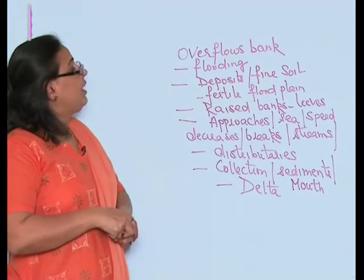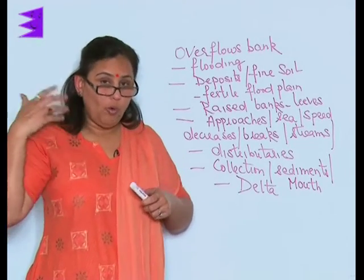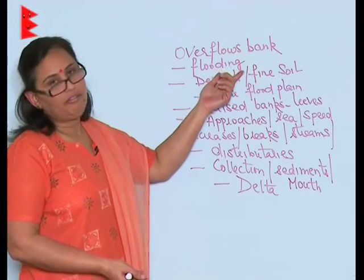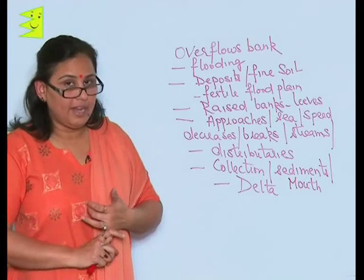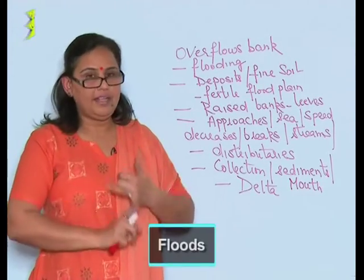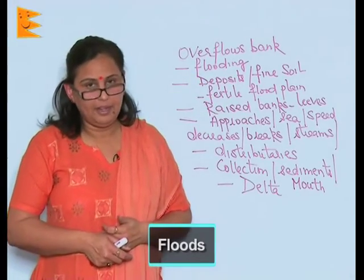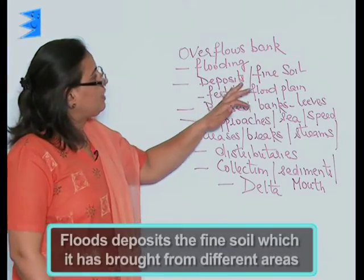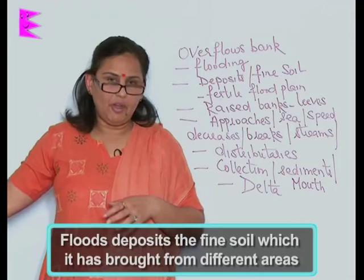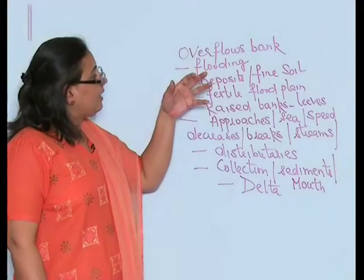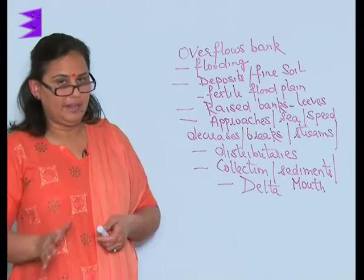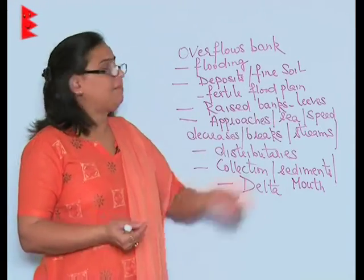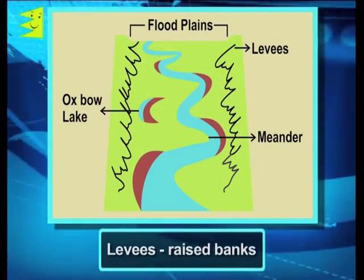Another change occurs when the river overflows its banks, causing floods in that area. Flooding also does one good thing — it deposits fine, fertile soil brought from many areas, forming a fertile flood plain. The river also creates raised banks called levees.